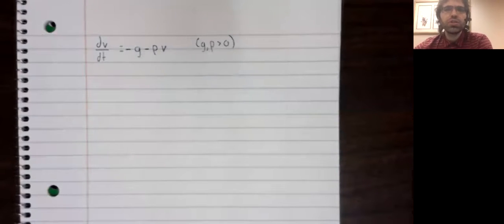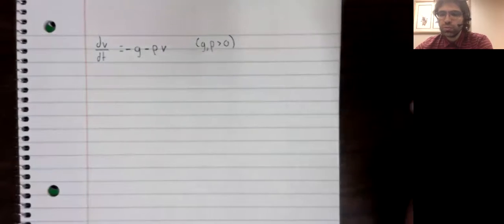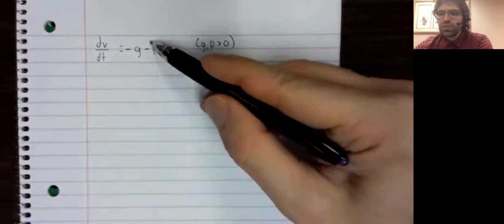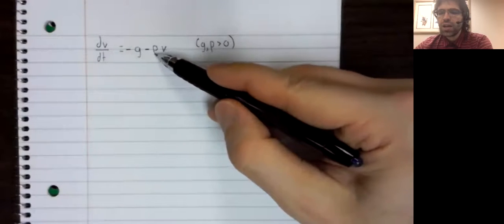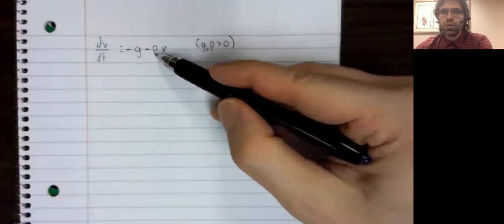Let me actually do this in stages, because this is going to give us a bit of information we're going to use soon. Let me start by dividing both sides by negative rho.